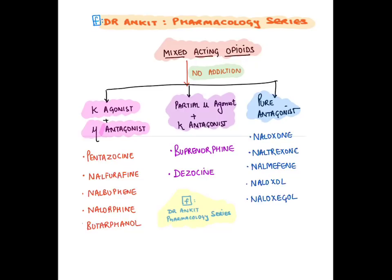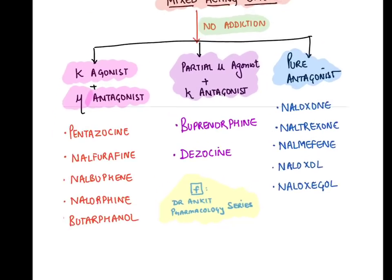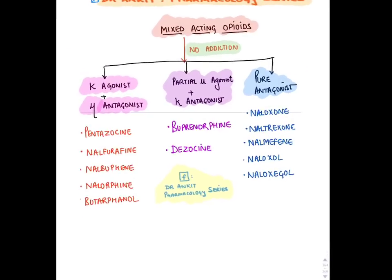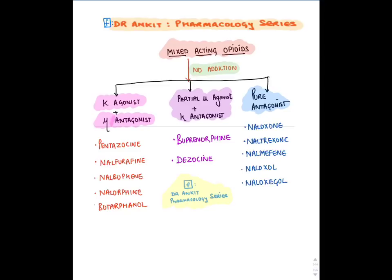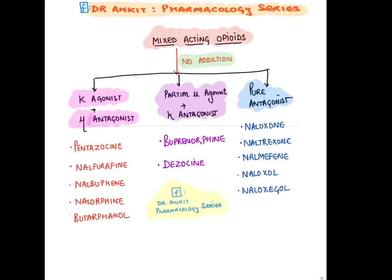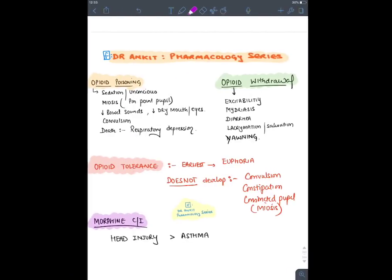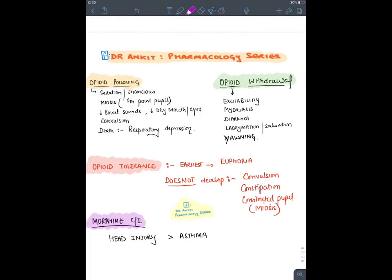Mixed-acting opioids are non-addictive. Kappa agonist/mu antagonist: pentazocine, nalbuphine, nalorphine, butorphanol. Partial mu agonist/kappa antagonist: buprenorphine and dezocine (a fast-acting IV analgesic). Pure antagonists all start with 'nal-' except nalorphine: naloxone, naltrexone, nalmefene.